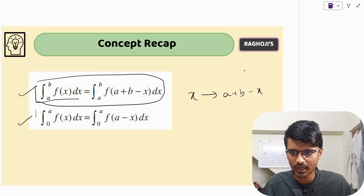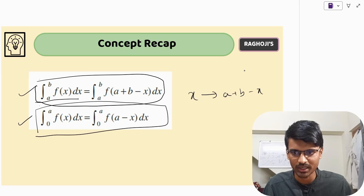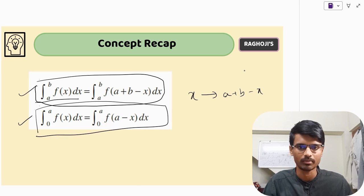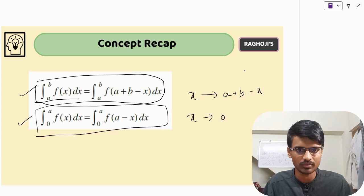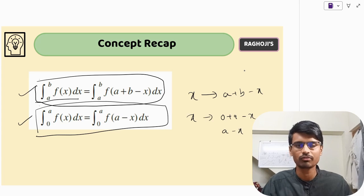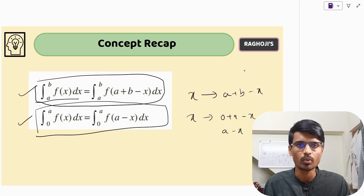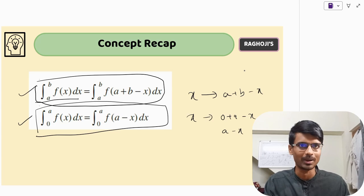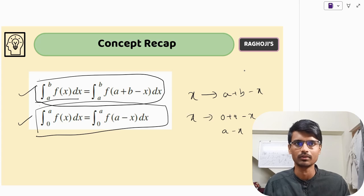Similarly, another variation of this property is: the integral from 0 to A of f(x) dx equals the integral from 0 to A of f(A − x) dx. Here, A plus B minus x becomes 0 plus A minus x, which is simply A minus x. We will look at a few questions and you will get a clear idea. Many questions have been asked — every year a question comes where you apply this property, so it is very important.